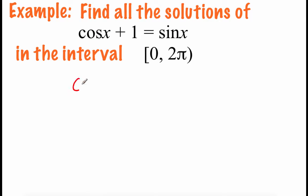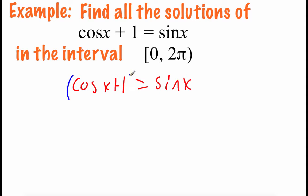So we're actually going to do something a little bit different than what we've done before — we're going to square both sides. We're going to square the left-hand side and the right-hand side. Now at the end, since we're squaring these, we could be introducing what are called extraneous solutions, so we'll want to go through and check our answers at the end just to make sure that all of them do work.